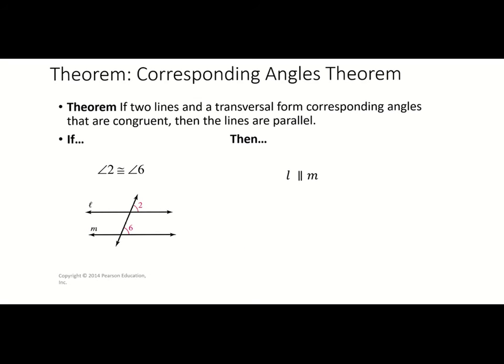Our next theorem is the corresponding angles theorem. This theorem says if two lines and a transversal form corresponding angles that are congruent, then your lines are parallel. We have two lines and a transversal, and when we look at corresponding angles — in this case angles two and six — we can see that they are congruent, so that means your lines are parallel.